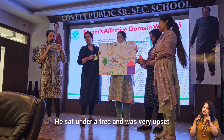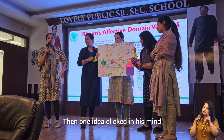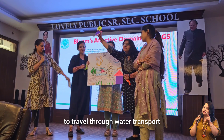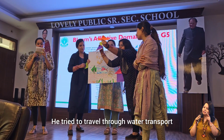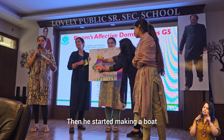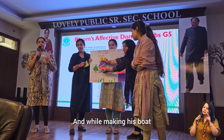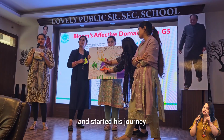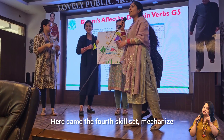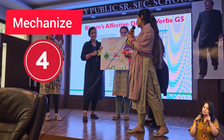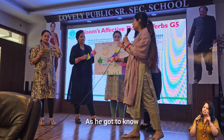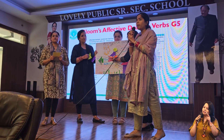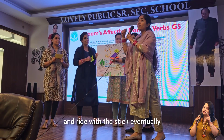He sat under a tree and was very upset. Then an idea clicked in his mind: he thought to travel through water transport. He did not lose hope and started making a boat. While making his boat, he found he was very tired, but he completed the boat and started his journey. There came the fourth skill set — mechanism. He didn't know how to ride a boat. As he got to know the bridge was broken, he thought he would not lose hope and would make a boat on his own, but he didn't know how to float it or ride with the stick.